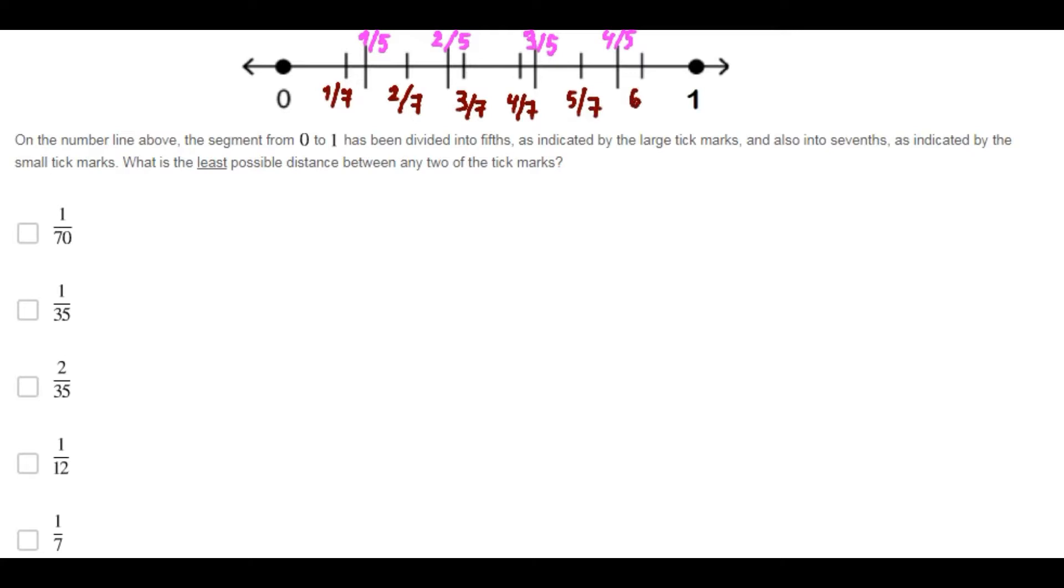We are looking for the least possible distance between any two of the tick marks. According to the figure, it can be this one, this distance, or probably this one, or this one, and no more. They are the ones that look smaller than the other ones.